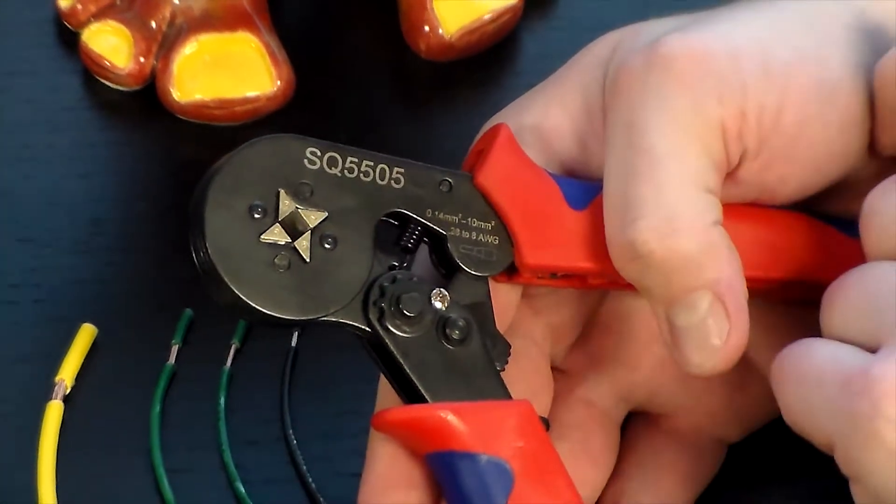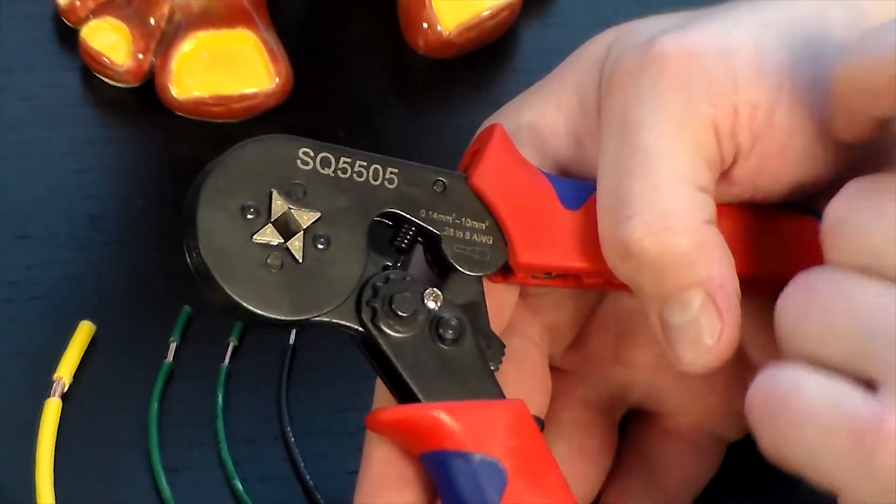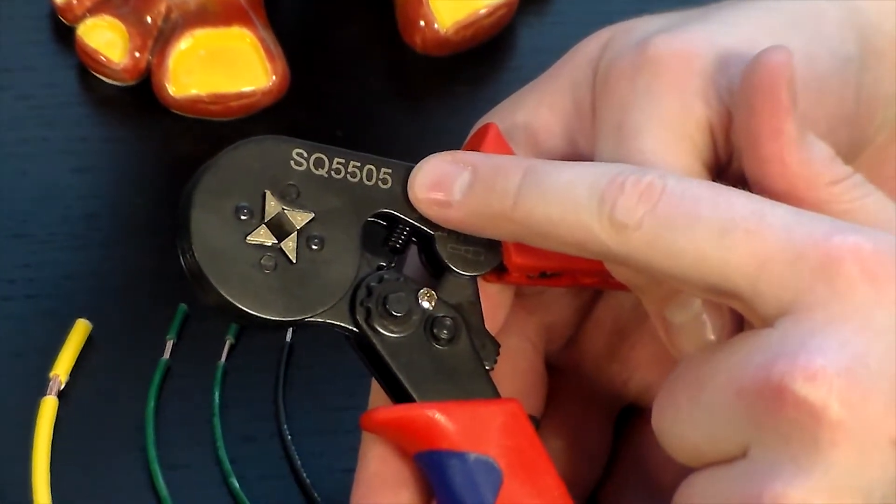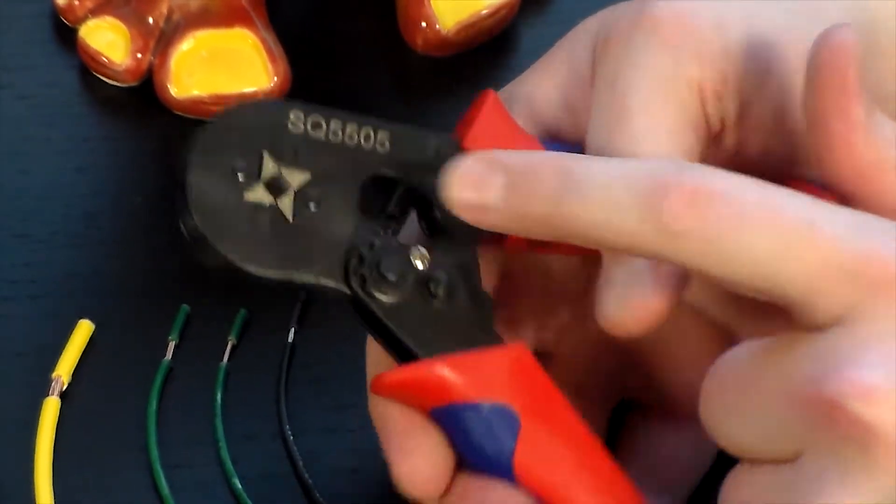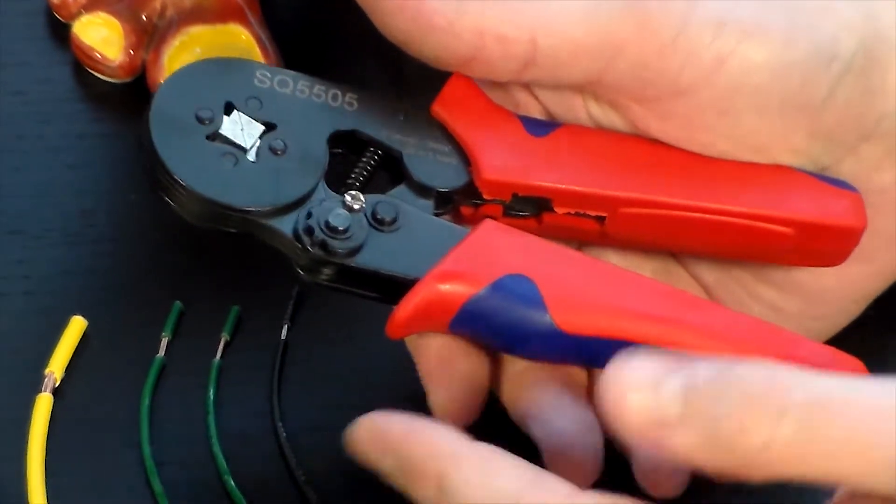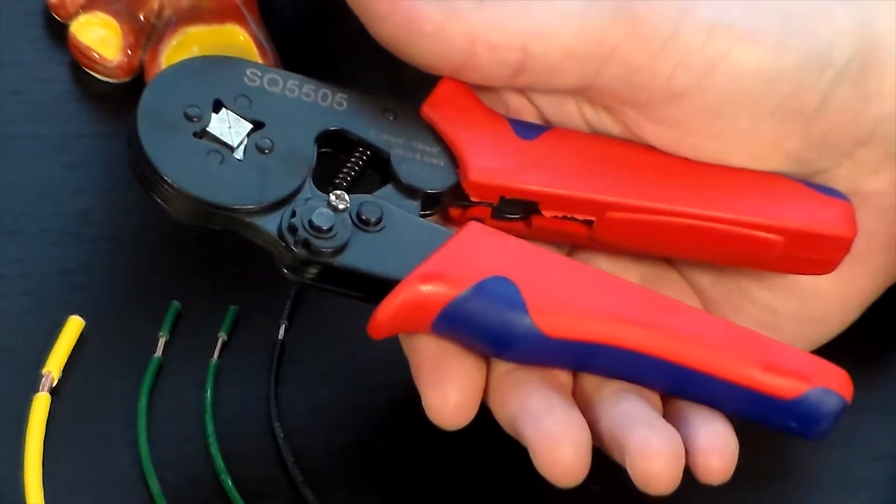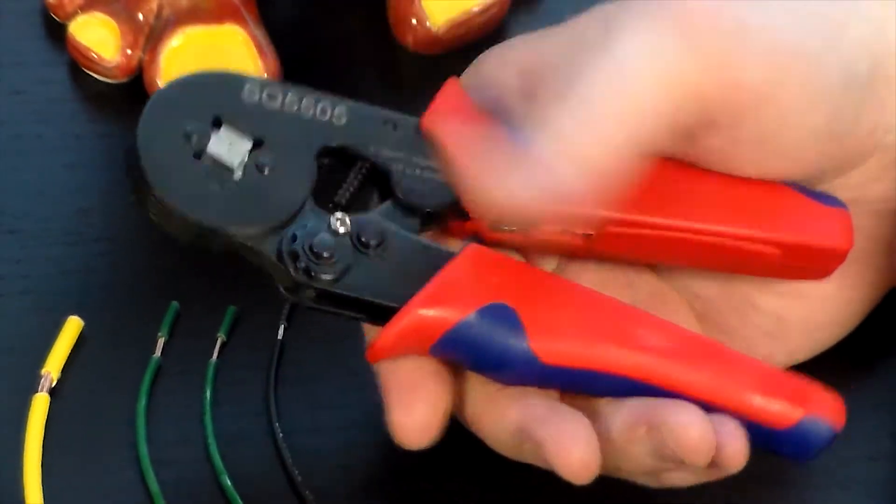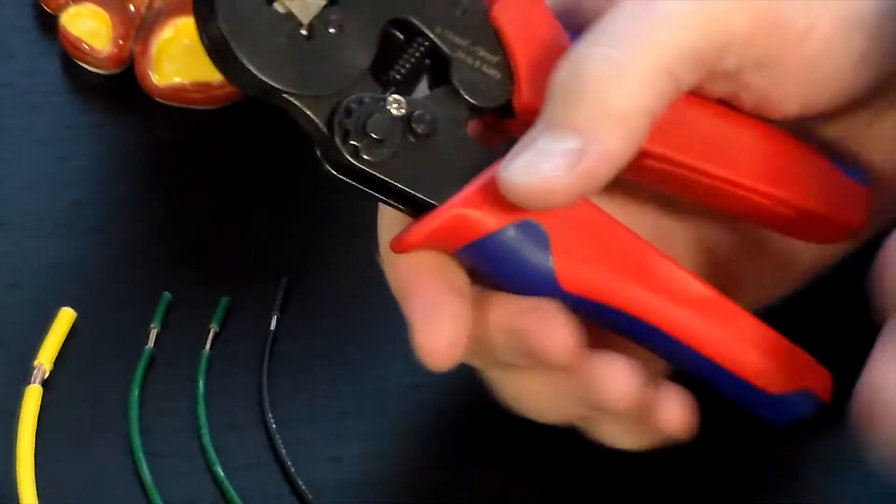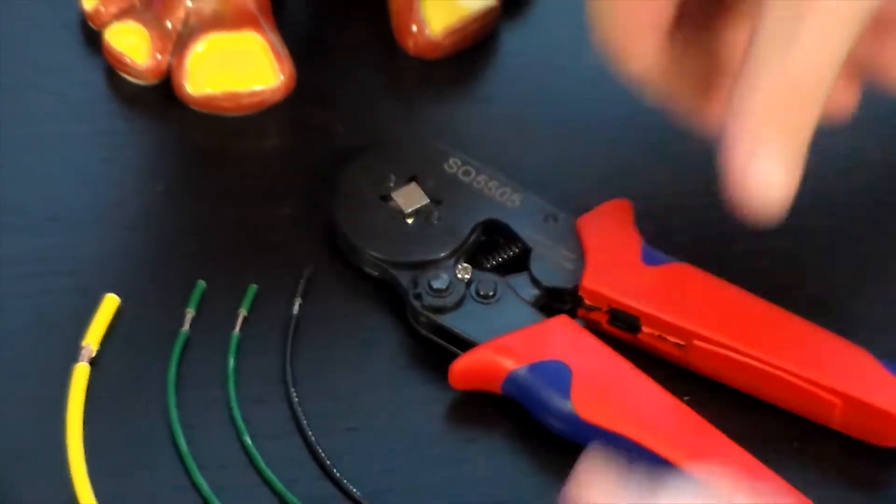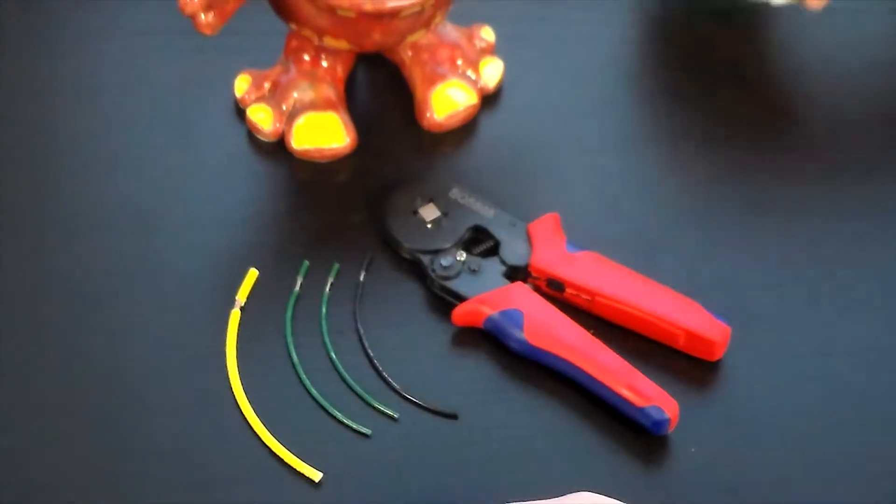Next you're going to notice the four teeth come together around the ferrule to give you that perfect square impression. Each of the tools has its unique serial number for identifying, and then you have the two-tone rubberized grip handle. Just give it a little squeeze there. It feels nice in the hand. Lightweight, yet sturdy.